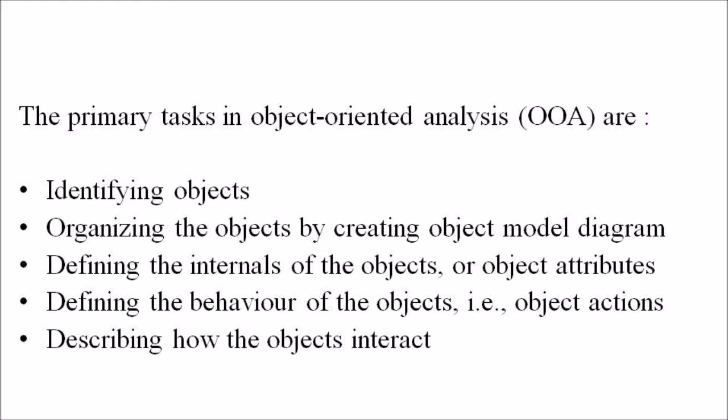The primary tasks in object-oriented analysis (OOA) are: identifying the objects, organizing the objects by creating an object model diagram, defining the internals of the object or object attributes, defining the behavior of the objects (that is, object actions), and finally describing how the objects interact. The common models used in OOA are the use-case model and object models.